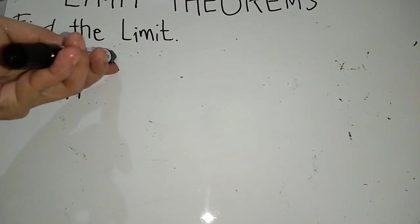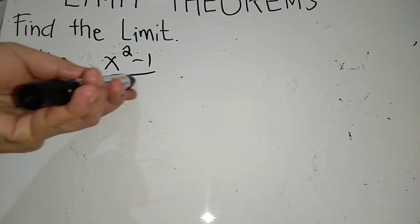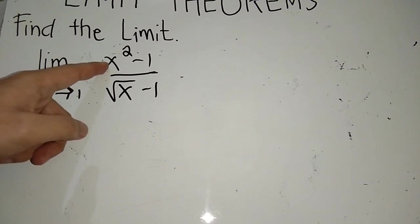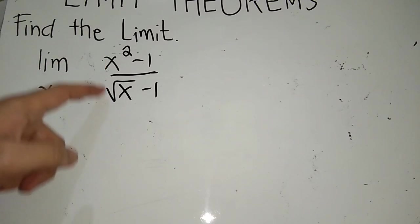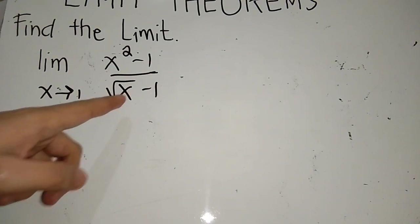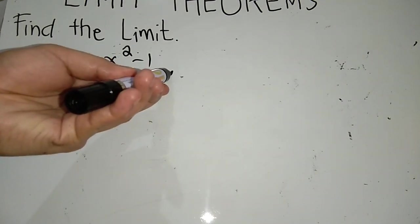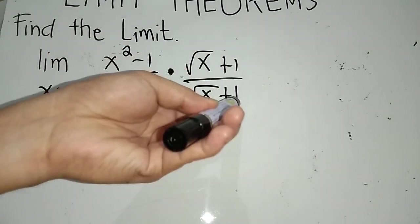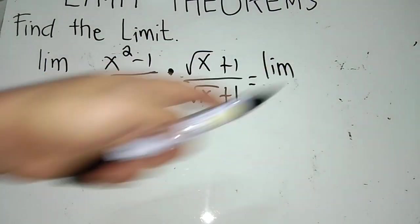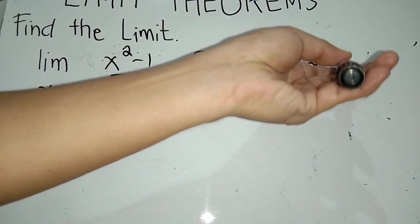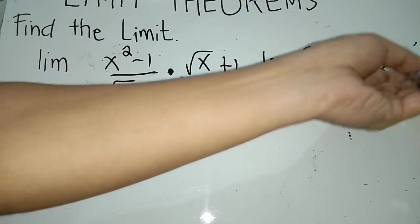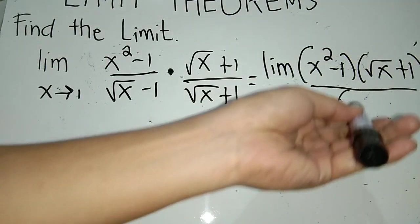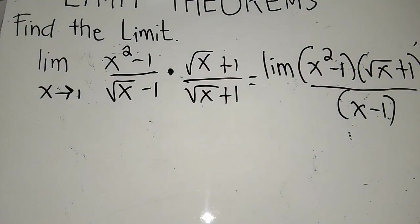Another example: the limit of x squared minus 1 over square root of x minus 1 as x approaches 1. Directly substituting x with 1 makes both numerator and denominator 0, which is indeterminate. So we rationalize the denominator by multiplying by square root of x plus 1 over square root of x plus 1. In the denominator, square root of x minus 1 times square root of x plus 1 gives x minus 1 by the FOIL method.